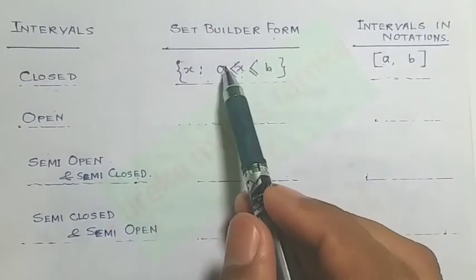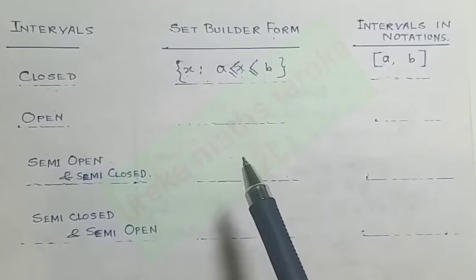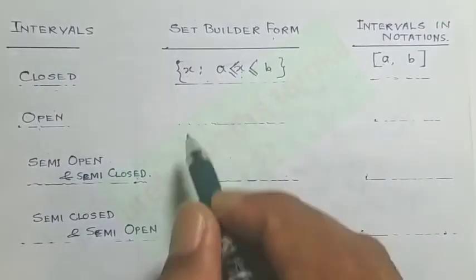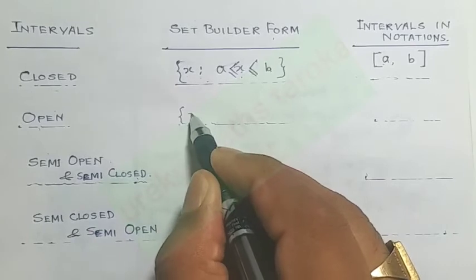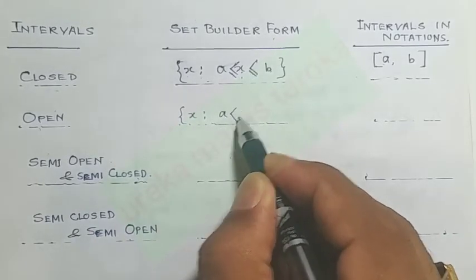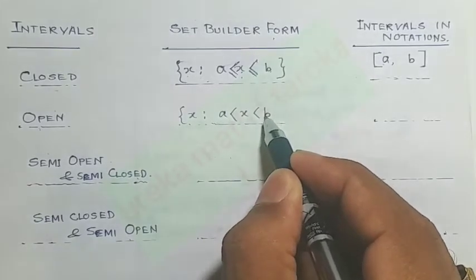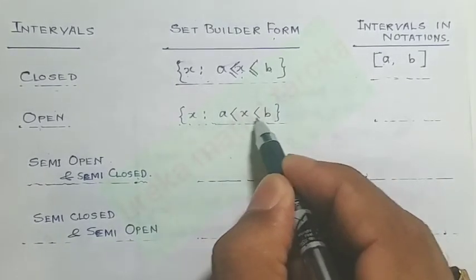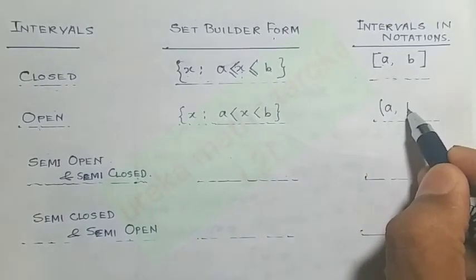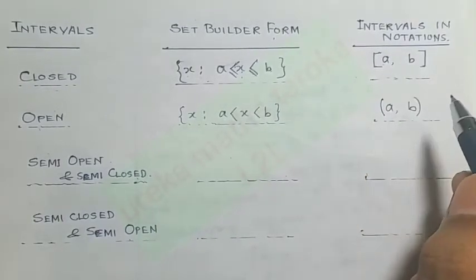By putting an equality sign, we indicate that a and b are included. For the open interval, we remove the equality sign. In set builder form we write a strictly less than x less than b.